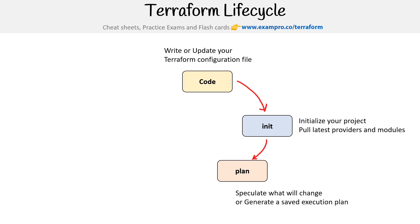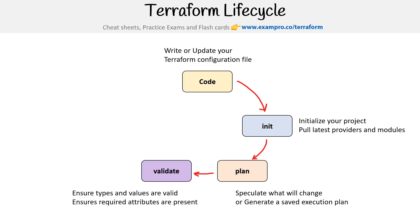From there, you're going to use plan. Plan allows you to speculate what will change, or generate a saved execution plan that you could use later on. When you run plan, validate happens automatically, but you could also run it separately — it ensures types and values are valid and ensures the required attributes are present within your configuration file.